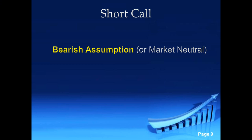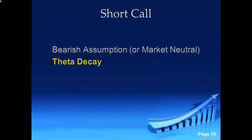One key requirement is a bearish assumption — market neutral to bearish. If you shorted a stock and the market went nowhere, you don't make money. With a short call, if the market doesn't go anywhere, we're still going to make money. We're also going to exploit theta decay. When you sell an option, every single day a couple of pennies are pulled out of that premium and go into your pocket. Even if the market slightly goes higher, you can still make money. Every day that goes by, you get paid.